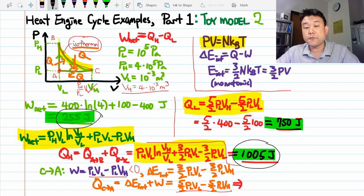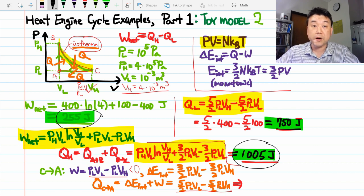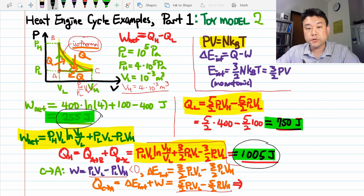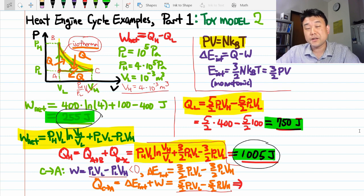And when we come back for heat engine cycle examples part 2, we are going to look at a theoretical heat engine cycle that was devised to maximize the percentage of input energy that's turned into mechanical work. It's called the Carnot cycle and we'll come to that when we get there. But the calculation there is a little more involved, so we'll reserve that until later. So, until then, bye.